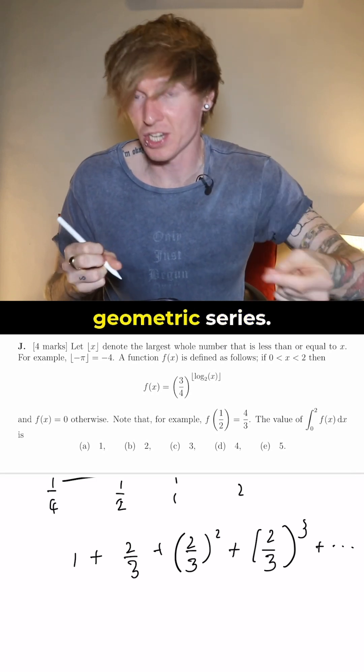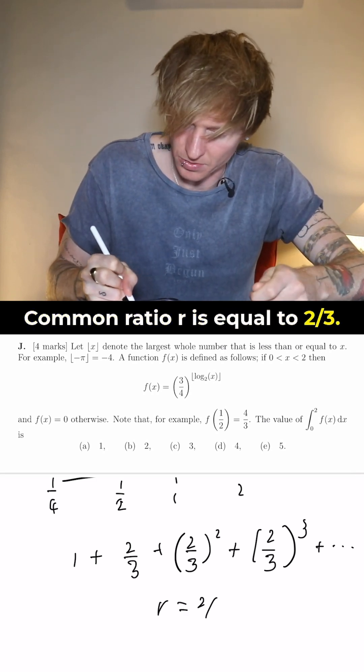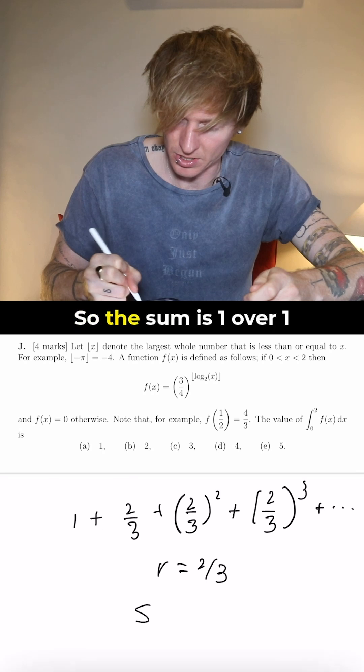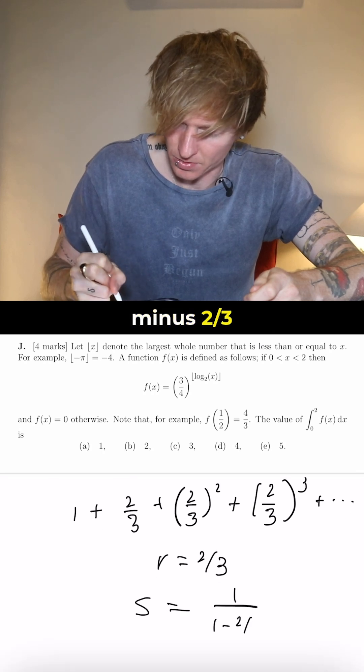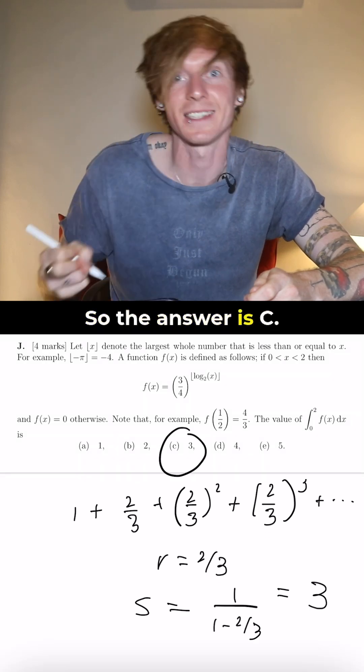So it's an infinite geometric series, common ratio r is equal to 2/3, first term 1, so the sum is 1 over 1 minus 2/3, which is equal to 3. So the answer is C.